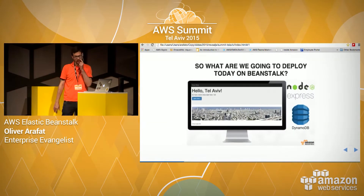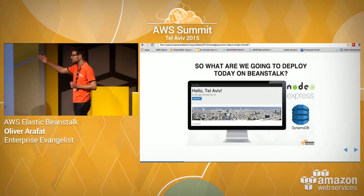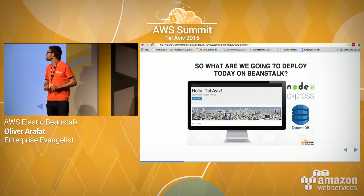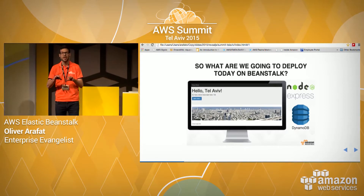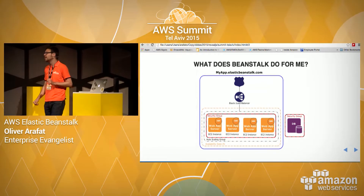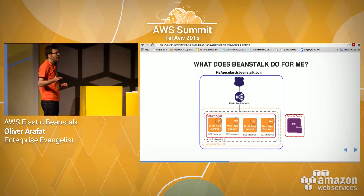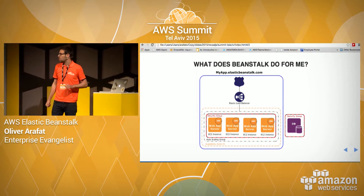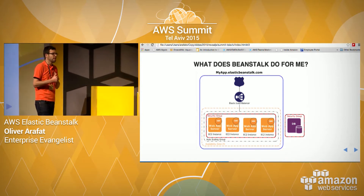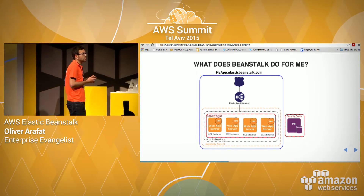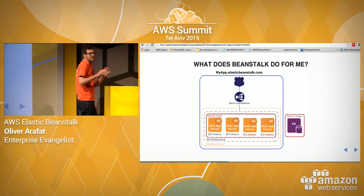This talk is about AWS Elastic Beanstalk. What we're going to deploy today on Beanstalk is a little web application I wrote running on Node.js, Express Framework, and DynamoDB. For those of you who don't know what Beanstalk is, it's a service that allows you to deploy and manage your application on the AWS cloud without really worrying about the infrastructure. You just upload your application and Beanstalk will take care of the provisioning of capacity, load balancing, scaling, and even application health monitoring.